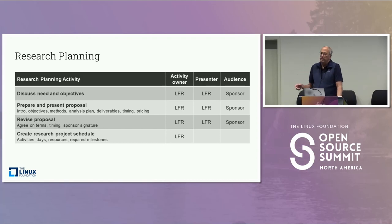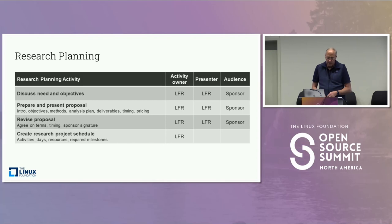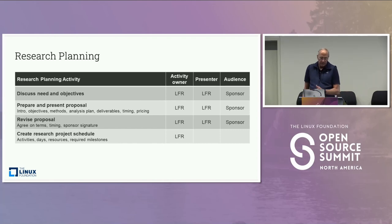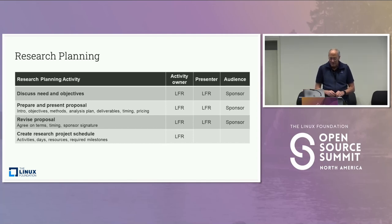For research planning, we talk to stakeholders, discuss their needs and objectives, and put a proposal together with information about objectives, deliverables, timing, and pricing. We revise the proposal because often stakeholders want it faster and cheaper. Then we put together a project schedule. The quality of that research instrument is absolutely critical from the standpoint of being able to collect data in the right way and do the analysis you want. You don't really know what the findings are going to be until you get to the analysis.